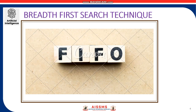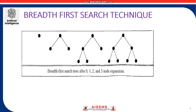Breadth-first search uses first-in first-out and uses the data structure Queue. In this strategy, the root node is expanded first, and then all the nodes generated by the root node are expanded next, and then their successors, and so on. In general, all the nodes at depth D in the search tree are expanded before the nodes at depth D plus 1. Breadth-first search is a very systematic strategy because it considers all the paths of length 1 first, then all those of length 2, and so on.